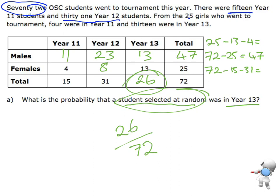In total, there are 26 students in Year 13, so our probability is 26 out of 72. I do expect that you can simplify that — use your calculator to simplify it to 13 out of 36. Or if you'd rather it as a decimal, write it to four decimal places: 0.3611.